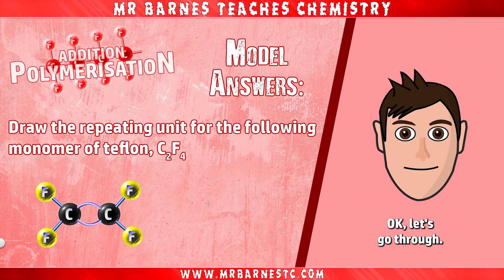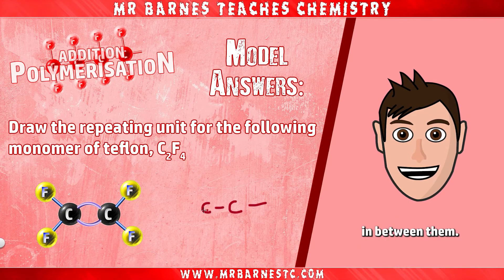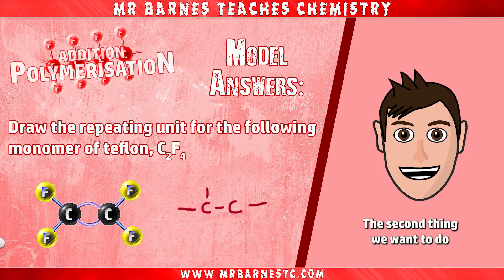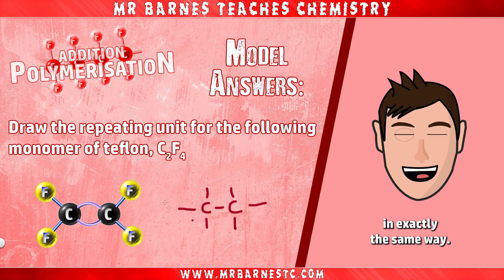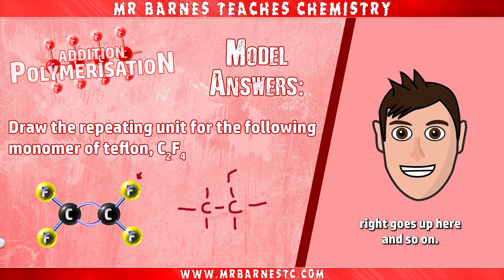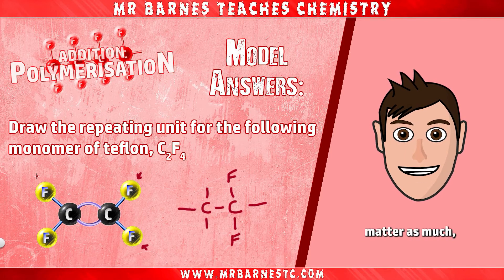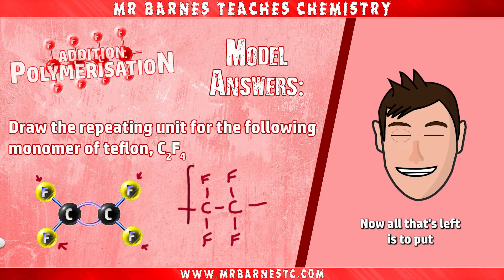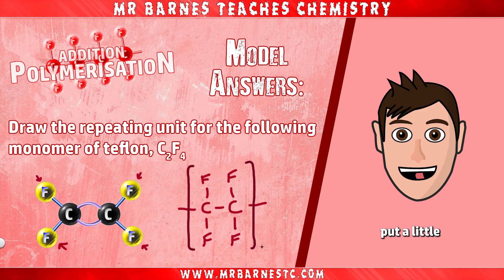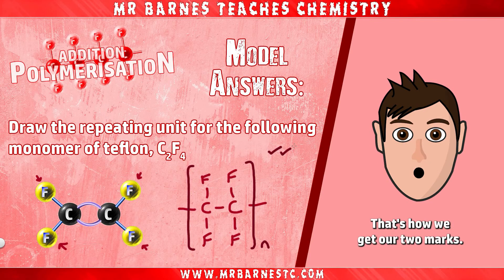Okay, let's go through. The first thing we want to do is draw out the two carbons with single bonds in between them. The second thing we want to do is make sure that we are mimicking our monomer in exactly the same way. So the fluorine that's in the top right goes up here and so on. Obviously for this molecule it doesn't matter as much, but when we have different parts of our monomer we have to get it in exactly the same place. Now all that's left is to put our bracket around and put our little N in the bottom right-hand corner to show that it's a repeating unit, and we are done. That's how we get our two marks.